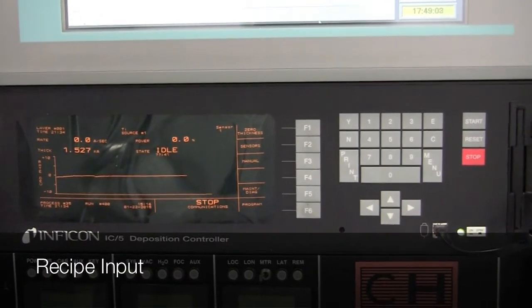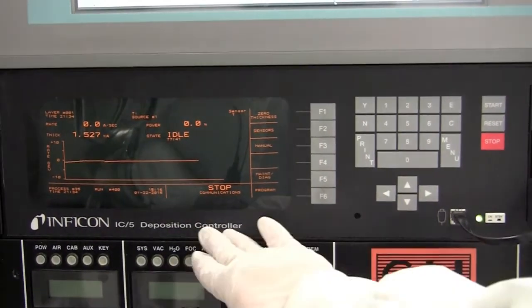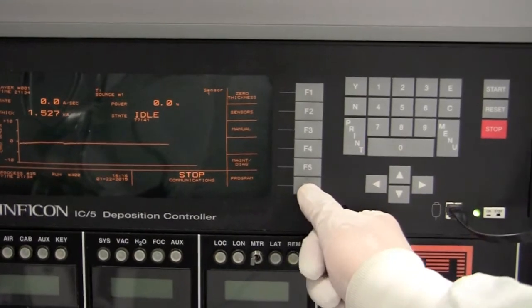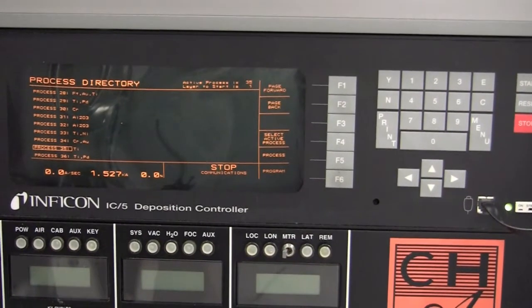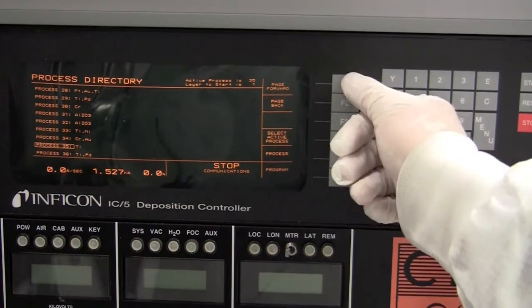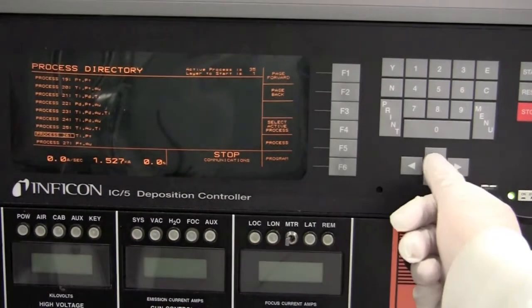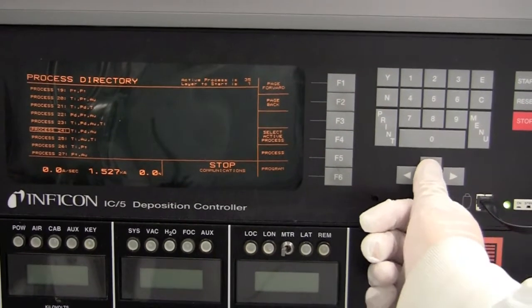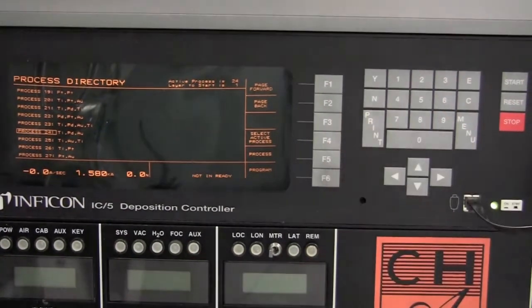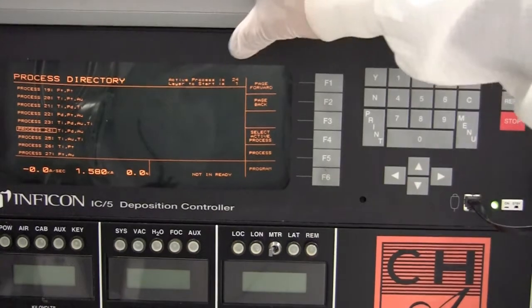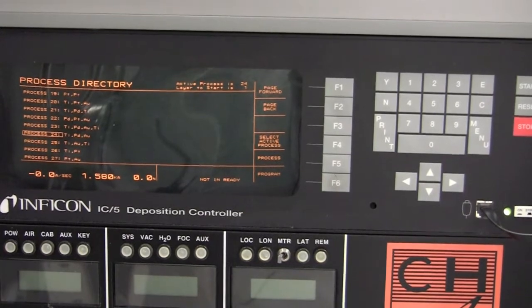While the chamber is pumping down to low pressures, we can go ahead and input our recipe. To do so, we're going to go to the recipe panel, push F6 for program, go to the process directory, and now we have a directory of all the processes for deposition. Using page forward and page back, I can find my necessary recipe. Today I'm going to run recipe 24. So I'll go up to 24 and then select, push F4 for select active process. Once I press that, we can now verify that the active process is 24, which means that we successfully loaded our recipe into the computer.